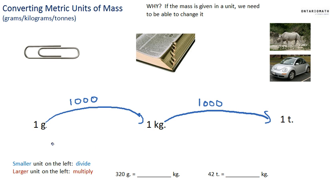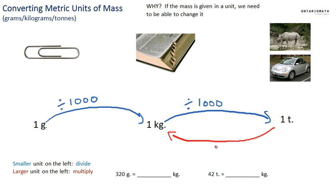If you're given the mass of an object in grams, divide it by 1,000 to get kilograms. If you're given kilograms, divide by 1,000 to get tons — and vice versa. If you're given tons and need kilograms, multiply by 1,000. And if you're given kilograms and need grams, multiply by 1,000.